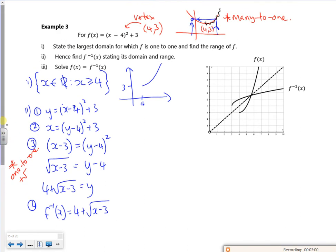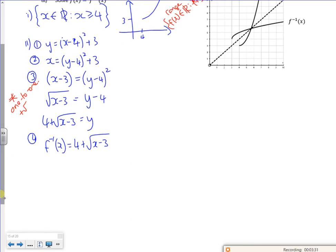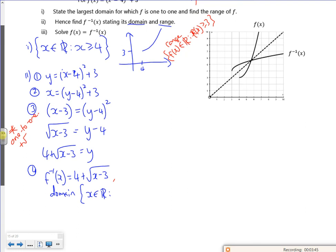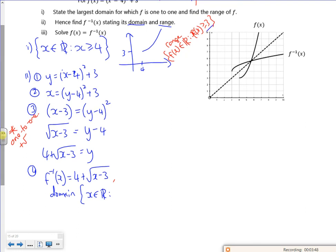Right now then, it says I've got to state its domain and range. So on the original function, the domain was x is greater than or equal to 4. And the range on the original function was f of x belongs to the reals where f of x is greater than or equal to 3. If you remember what I said, the range of the function is the domain of the inverse and the domain of the function is the range of the inverse. So this is domain, which you have to make sure you write down. So it's x belongs to the real numbers such that. Now, the domain of the inverse is the range of the original function, so that's greater than or equal to 3.